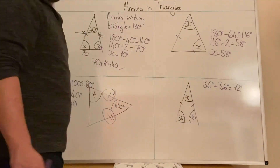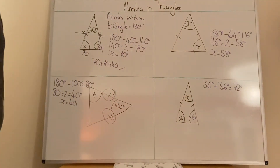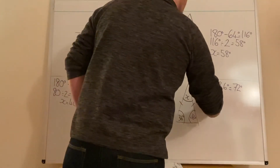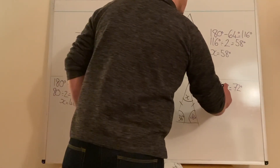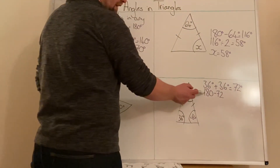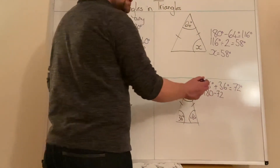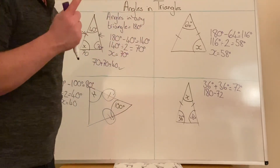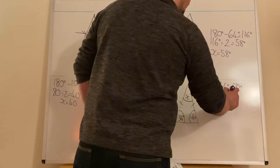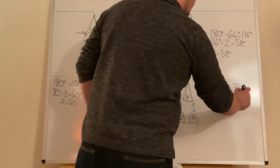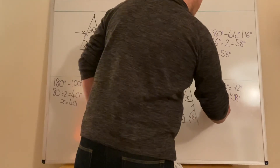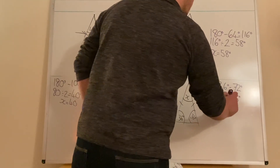Those bottom two angles add up to 72 degrees. We then do 180 minus 72, because angles in a triangle add up to 180 and we've already got 72 — we're working out what the remaining angle is. So we take everything away and that equals 108 degrees. So x is 108 degrees.